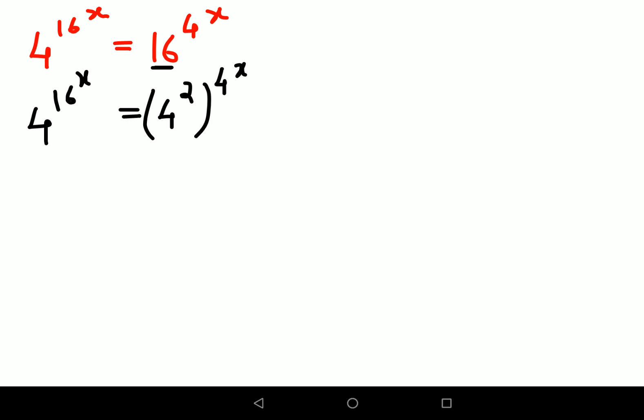So now if you see, the bases have become the same, so I can directly equate the indices: 16^x = 2·4^x.